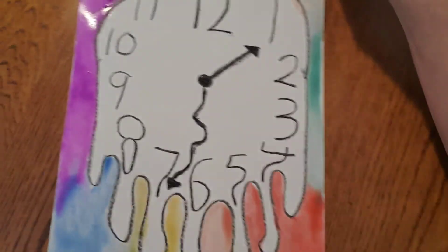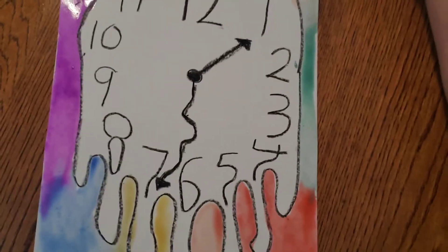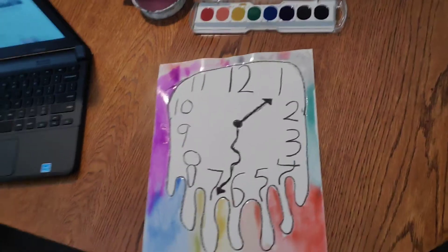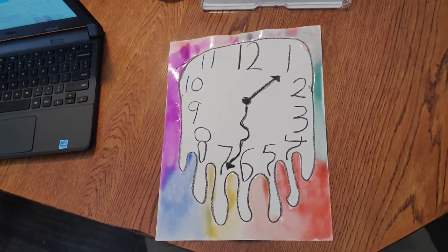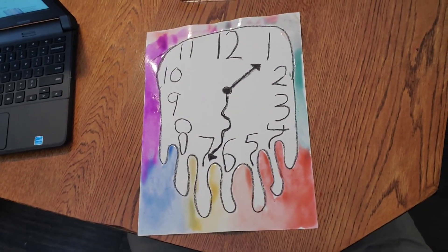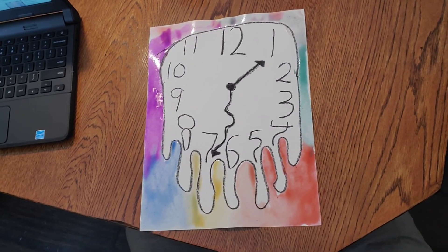So when you're all done, you should have your very own Salvador Dali clock. It kind of looks like it's from a dream with all the different colors and the rainbow. So I hope you enjoyed it and hope you had a fun time learning about Salvador Dali. Thanks.